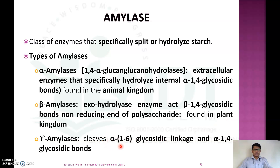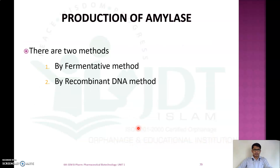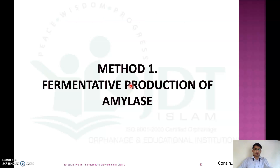Gamma amylase will cleave both alpha 1,6 as well as alpha 1,4 glycosidic bonds. Now there are two methods for the production of amylase: the first is the fermentative method and the second is the recombinant DNA method.